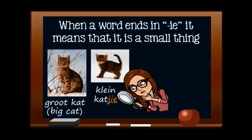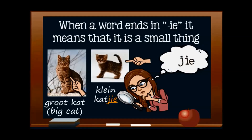Verklein woorde all end in the 'ie' sound — that is I-E, and together they make the 'ie' sound. In our first example we have a groot kat, a big cat. Big in Afrikaans means groot. But when we want to talk about a small cat or a kitten, we talk about a katjie. The part of katjie that makes it a verklein woord is the J-I-E that we add to the end. Jie is one of the ways we change a word to the verkleining, but there are many other ways that we will look at in this video.